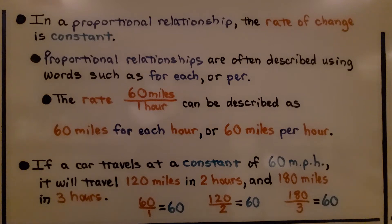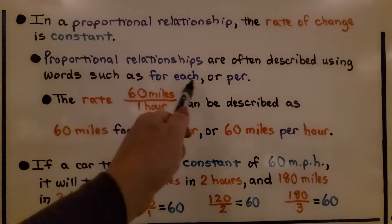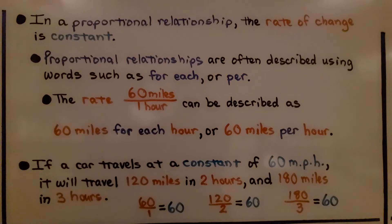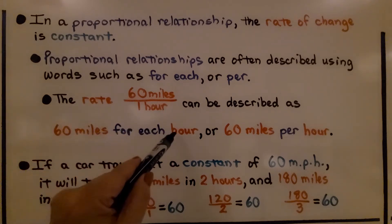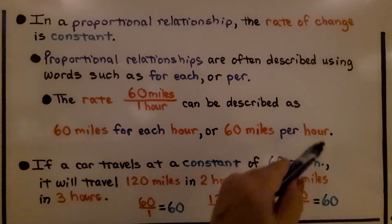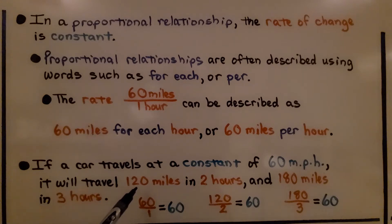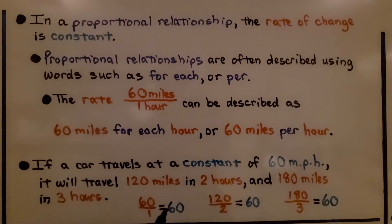Proportional relationships are often described using words such as 'for each' or 'per.' The rate 60 miles over one hour can be described as 60 miles for each hour or 60 miles per hour. If a car travels at a constant 60 MPH, it will travel 120 miles in two hours and 180 miles in three hours — it's going 60 miles for each hour.